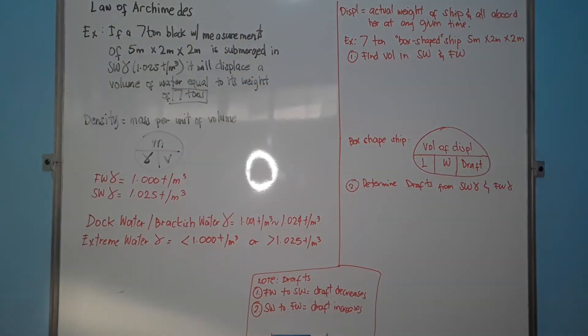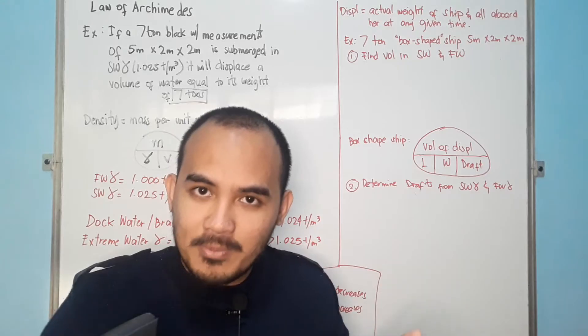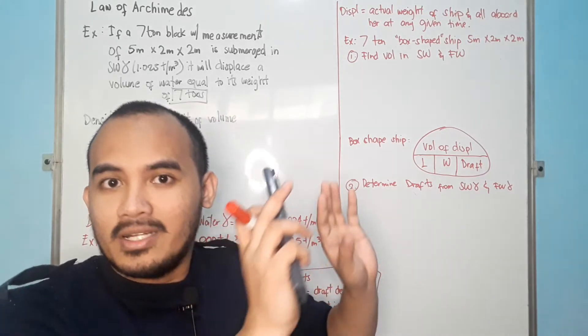Now, if we go up there, let's discuss about displacement. What is displacement? Actual weight of ship and all aboard her at any given time. I'll give you an example. 7-ton box-shaped ship. On other books, we have formulas for ship shape. But this time, on this example, we are going to discuss about box shape. Formulas and competitions about ship shape, we'll discuss that one in the future. But right now, box shape muna tayo.